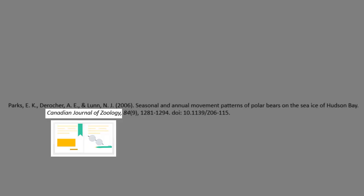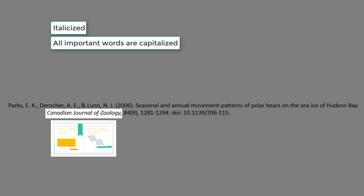The journal title is the title of the publication in which the article has been published — in this case, the Canadian Journal of Zoology. In an APA citation, the journal title appears after the article title. The journal title is in italics to distinguish it from the article title, and uses headline-style capitalization, which means that all important words are capitalized — so most words, except words like the, and, a, etc.